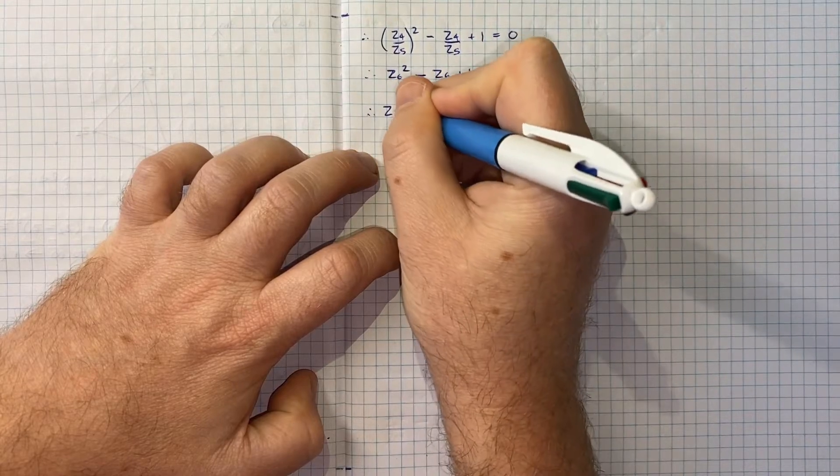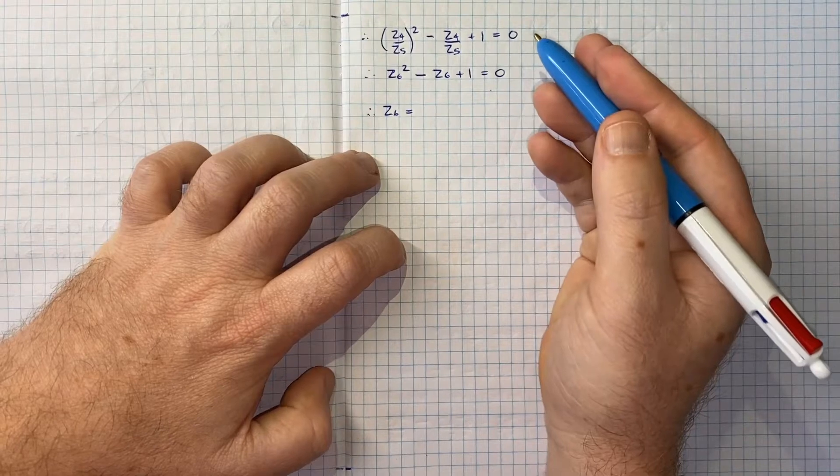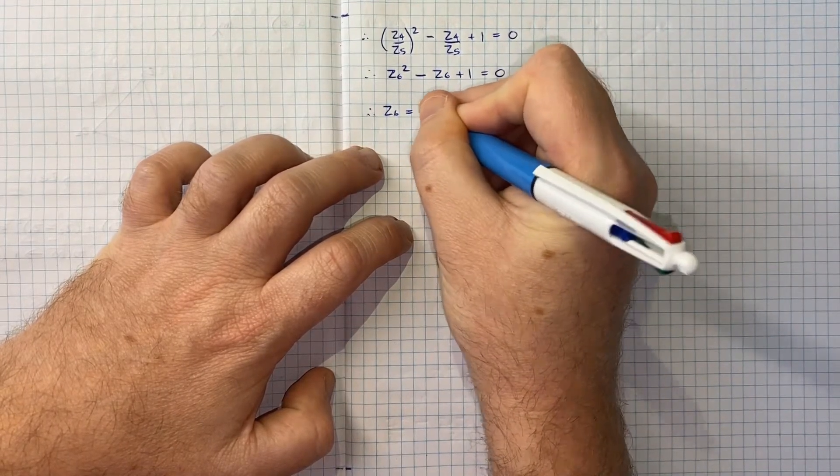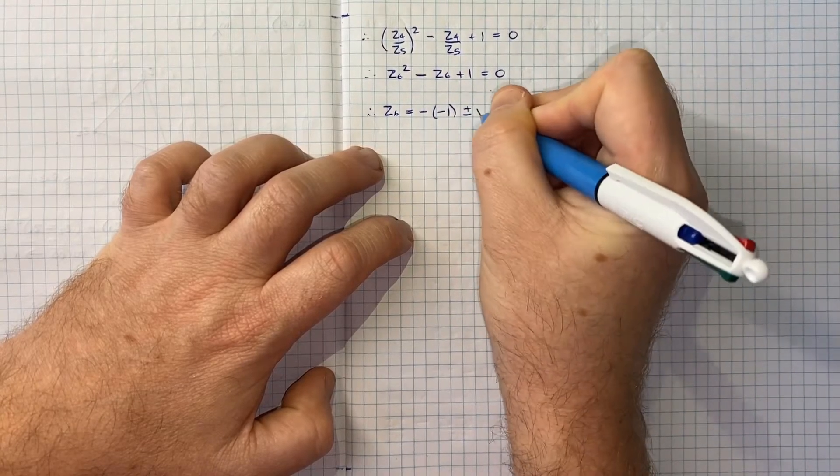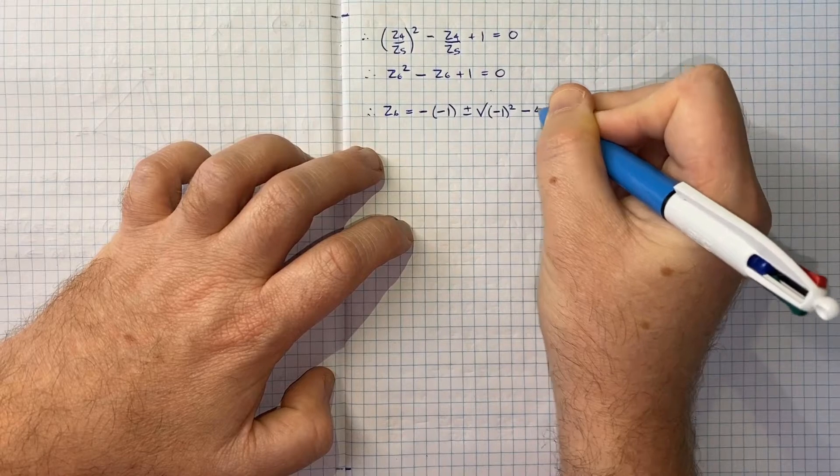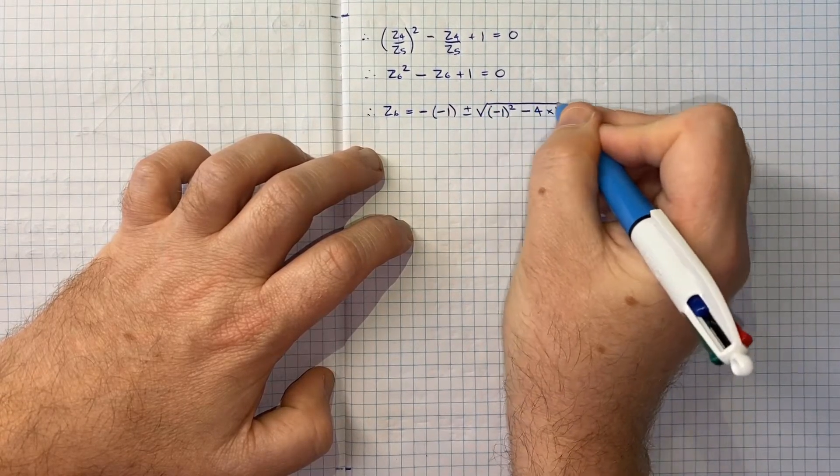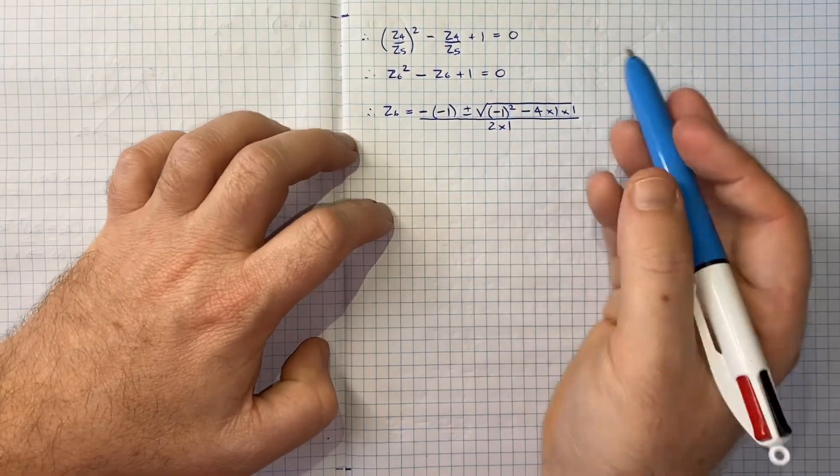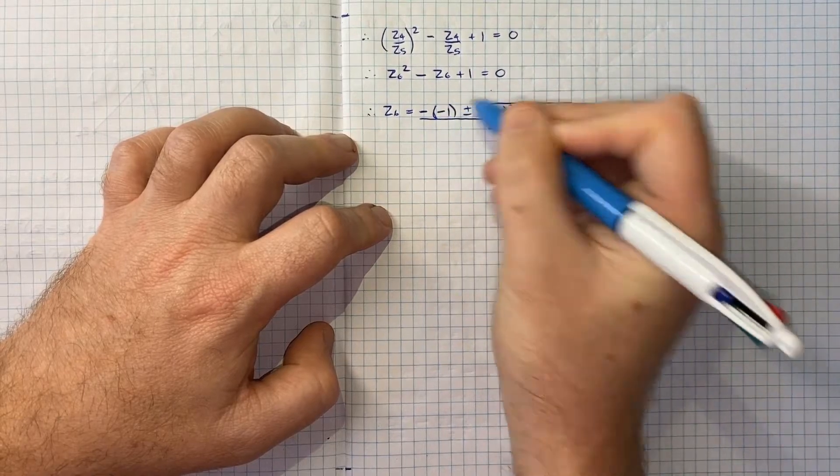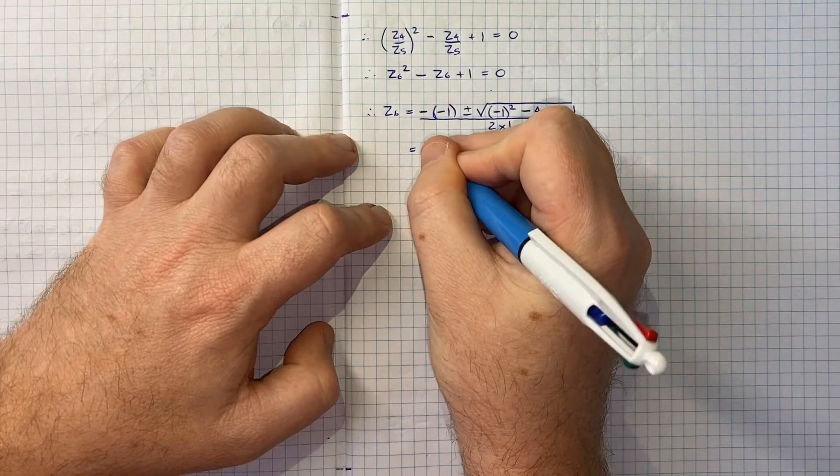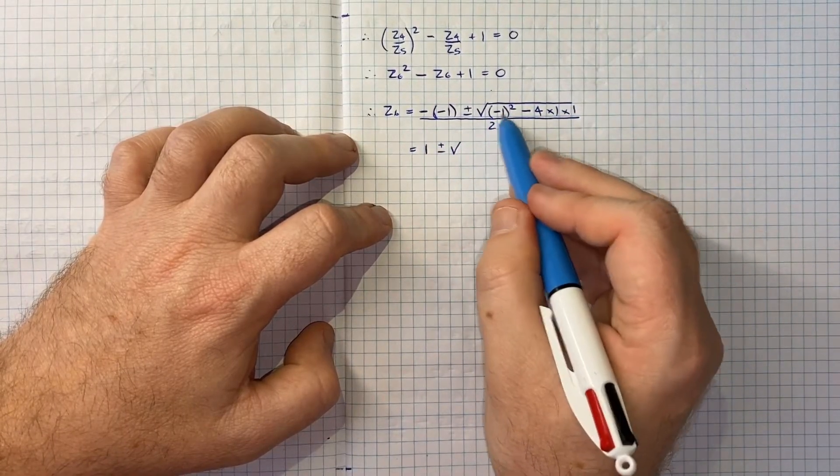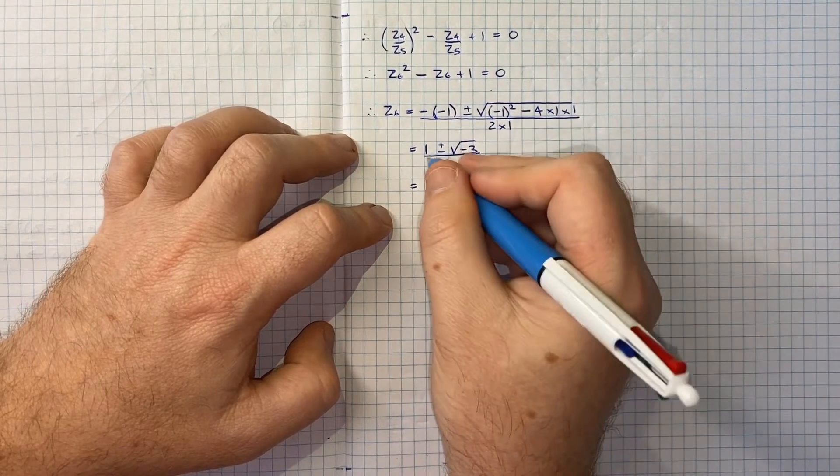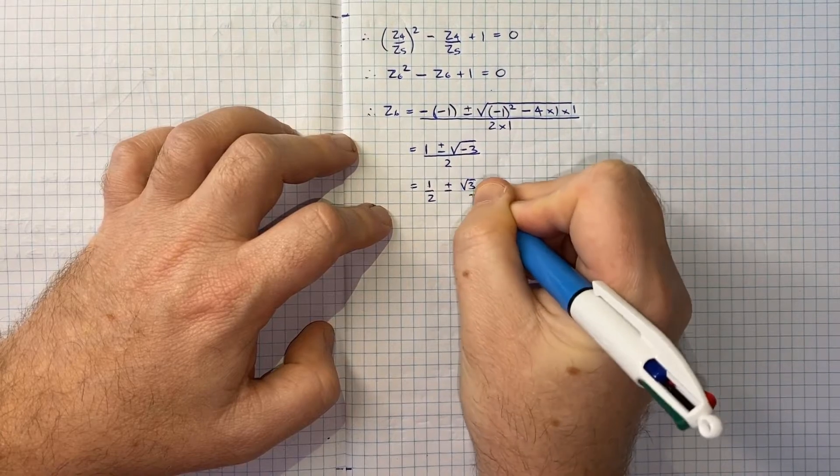Therefore Z6 will equal negative B squared plus or minus the square root of B squared minus 4AC over 2A. So we'll go negative negative 1 plus or minus the square root of B squared minus 4 times A times C over 2 times 1. Let's clean this up. We've got negative negative 1 is positive 1, plus or minus the square root of 1 minus 4 or negative 3 over 2.